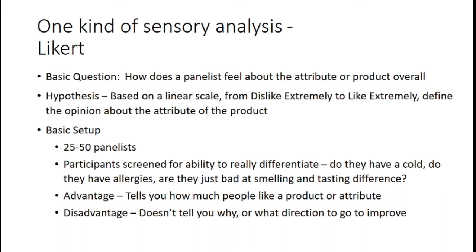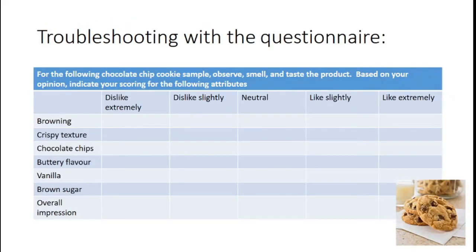For example, if you had chocolate chip cookies and someone says 'I dislike the butteriness' — is it because it's too buttery, or not buttery enough? That's why Likert and just about right often go hand in hand. Just about right gives you the direction, and Likert gives you the opinion. If someone dislikes the brown sugar, is it because they can't taste it, or because it's overwhelmingly too much and they want to taste chocolate instead? Think about pairing these questions together.